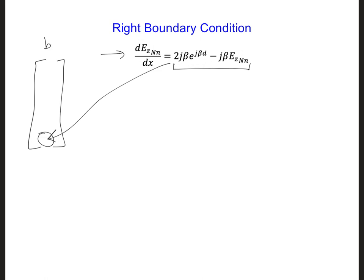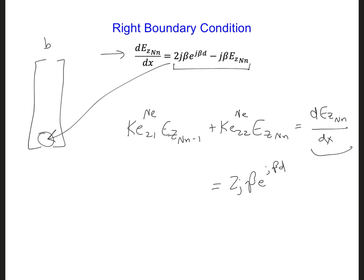So the very last element equation for the very last node of the grid will have the following form: ke21 for element ne, the last one, times ez at the second to last node, plus ke22, the last element, times ez for the very last node. And that's equal to dez nn over the partial derivative with respect to x. So now we can fill in here. This will be equal to 2j beta e to the j beta d. I'm filling in these so we can see the full form of this equation.